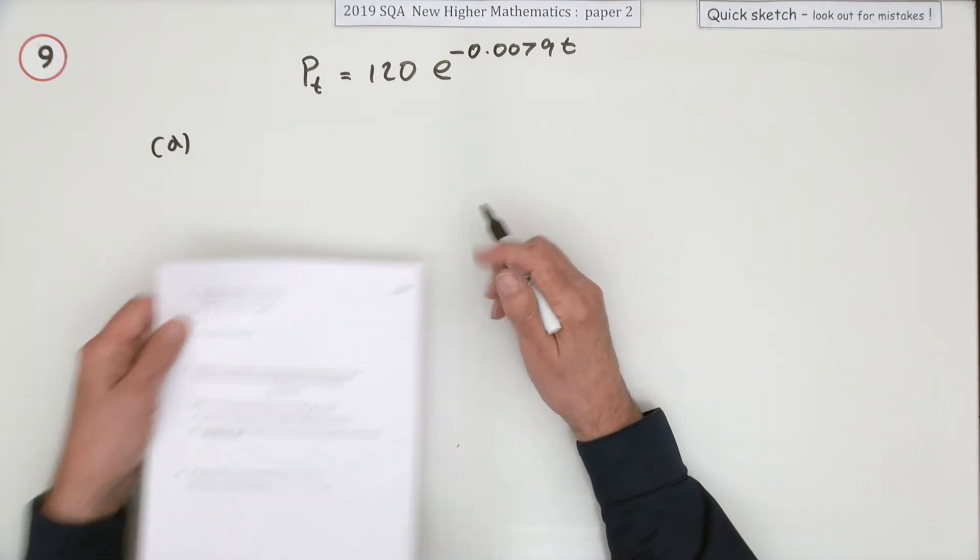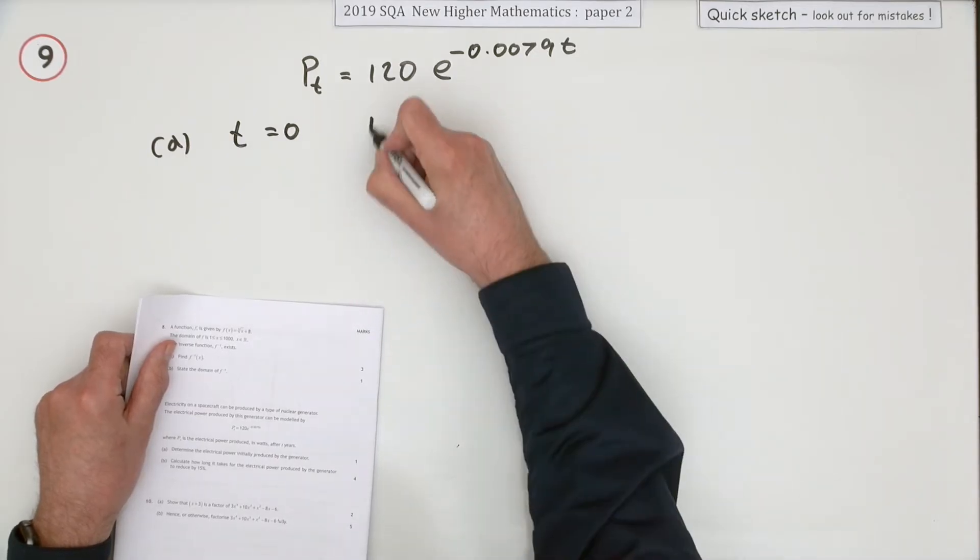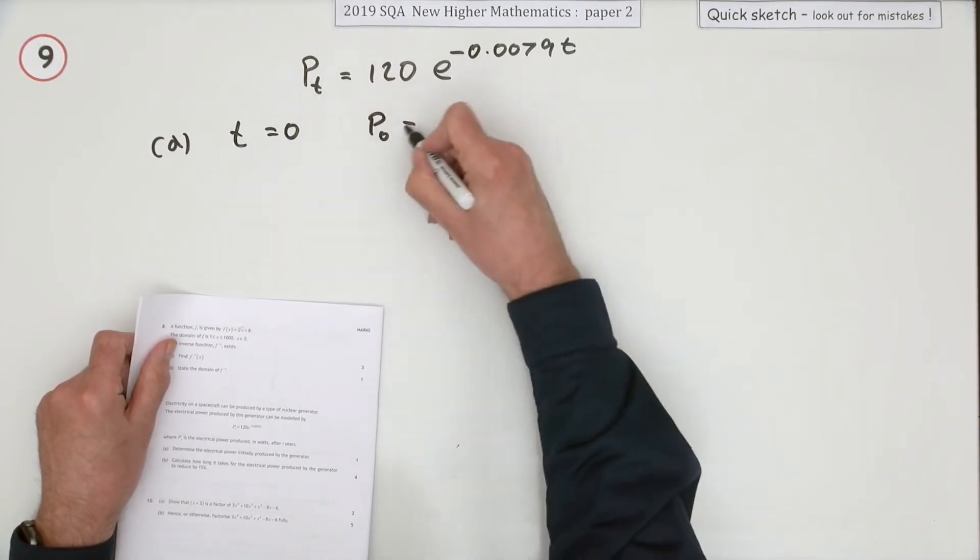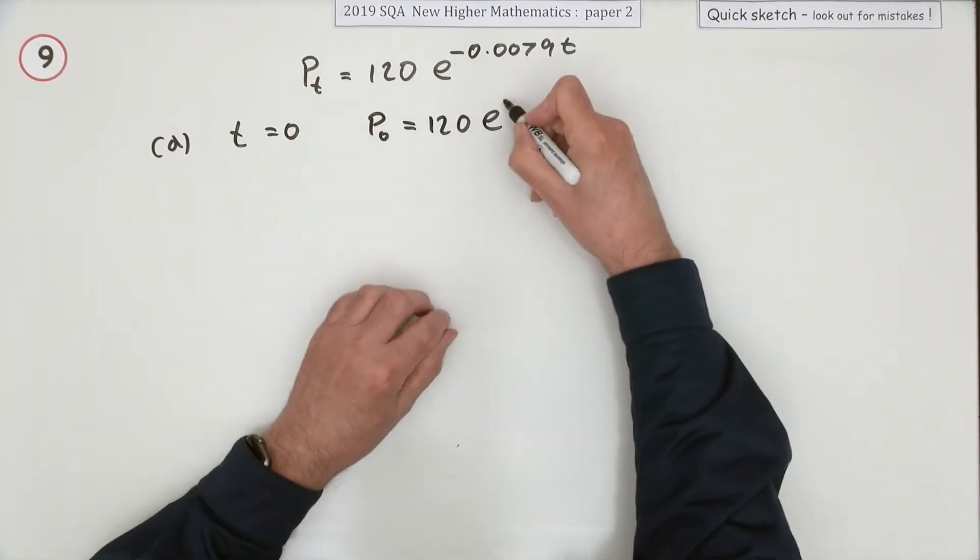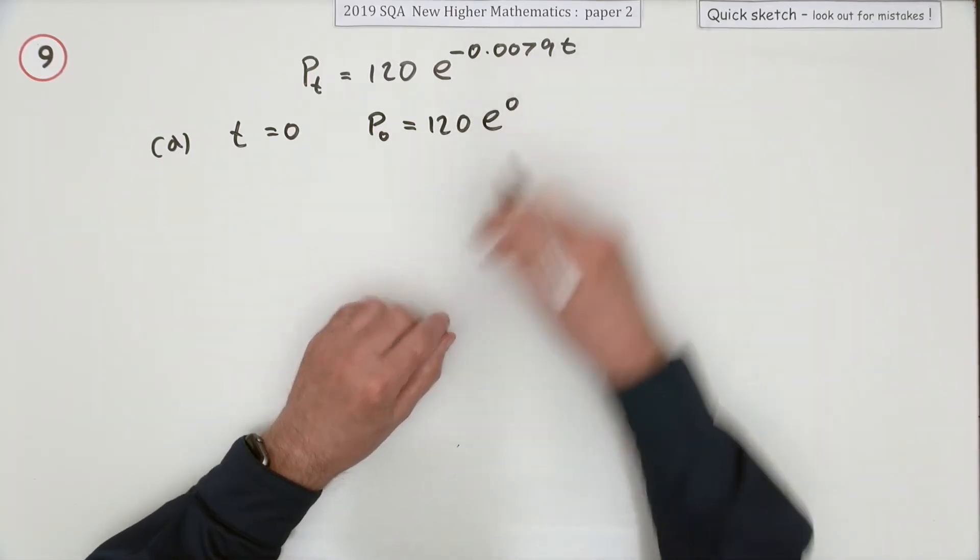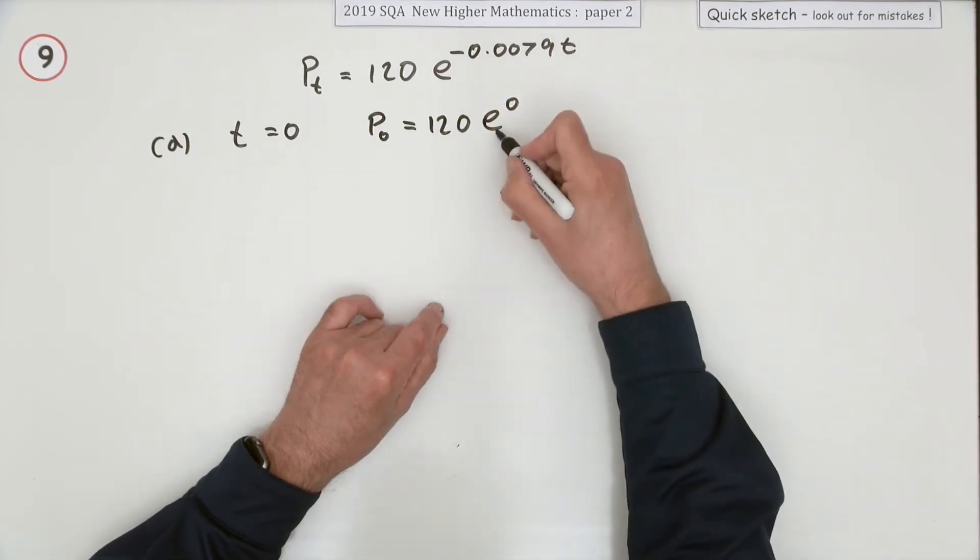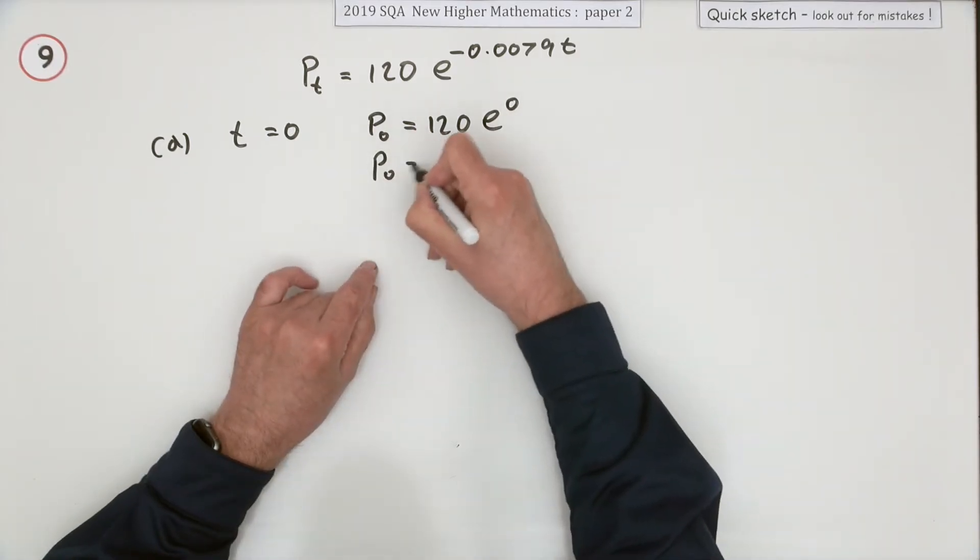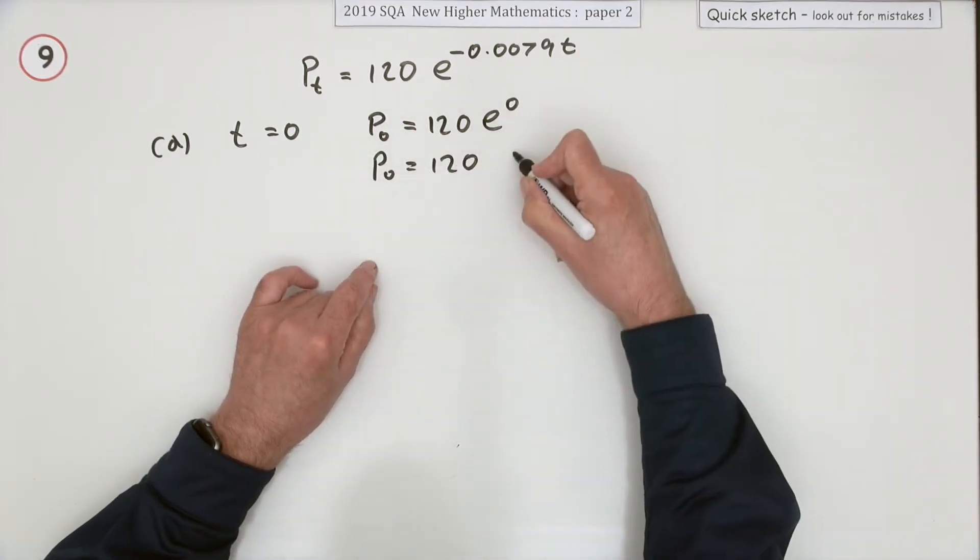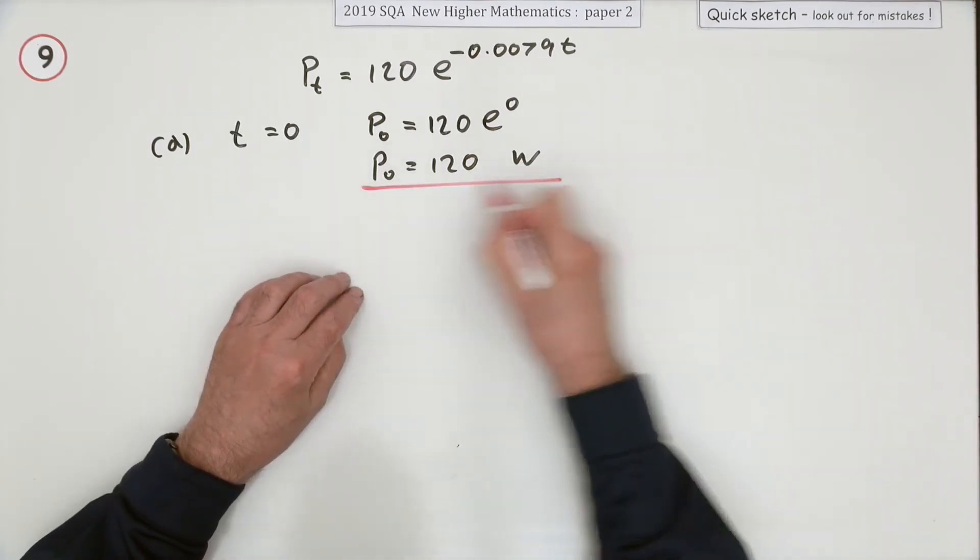Initially means t = 0. If t = 0, then P₀, which stands for the initial amount, will be 120e^0. When you multiply by zero the exponent becomes zero, and e^0, anything to the zero, is one. So P₀ is 120 watts. That should be enough to keep a light bulb going.